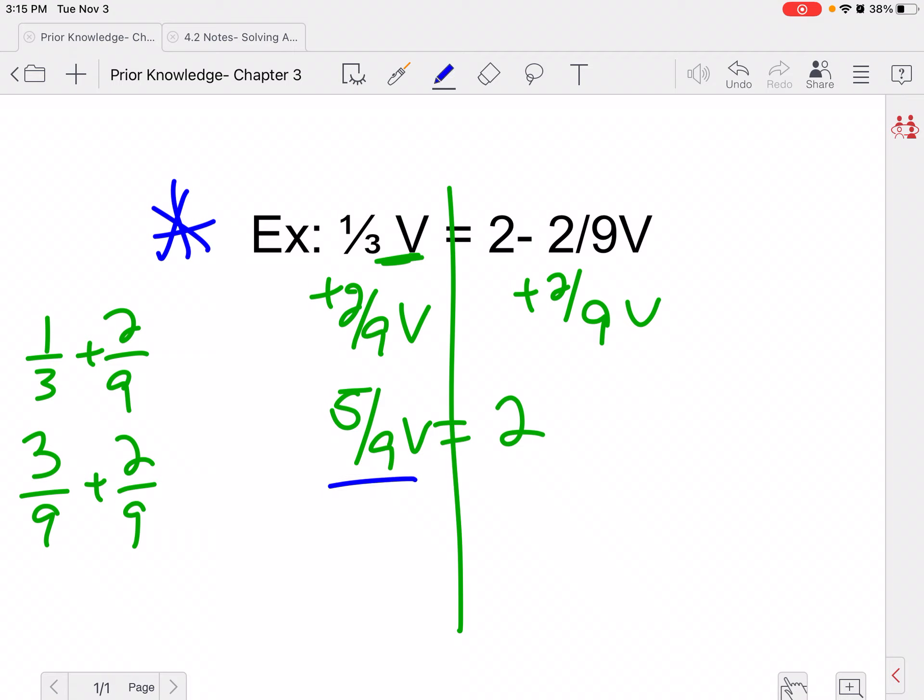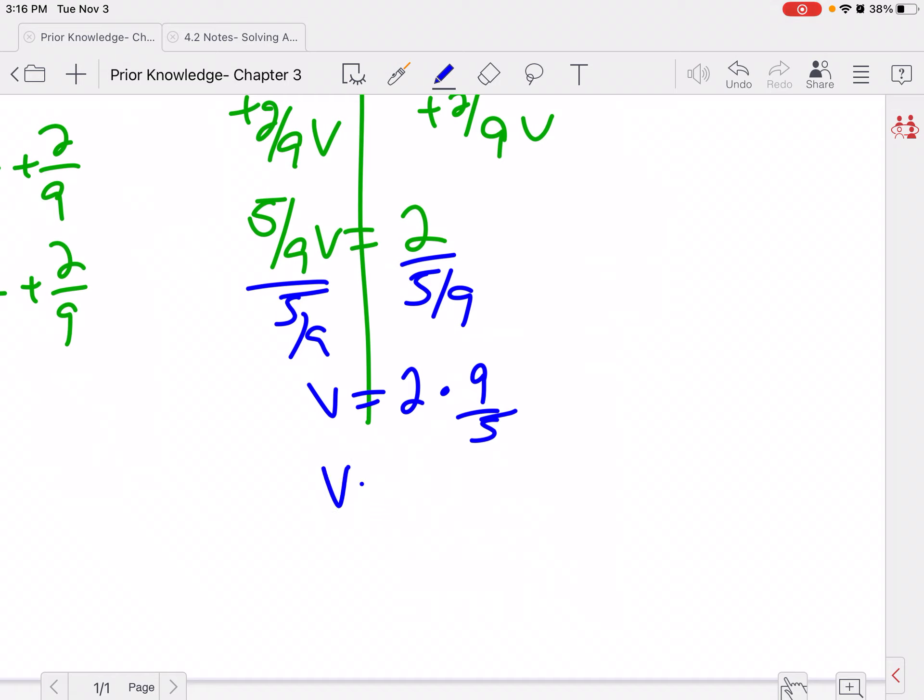And we're going to go ahead and divide by the 5/9, or we could have multiplied by the reciprocal. That will give you the same answer. So this would be 2 times 9 over 5. Nothing cross reduces, so I would just get 18 over 5 because I just multiply straight across the top and straight across the bottom because there's an invisible 1 here.